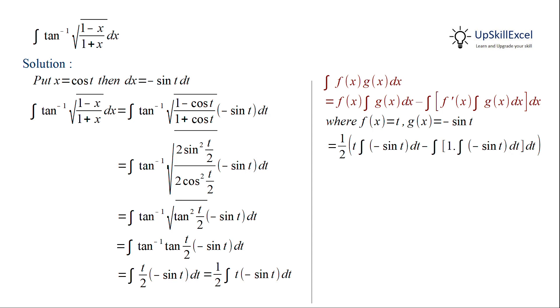We know that integration of minus sin t is cos t and integration of cos t is equal to sin t. Therefore, on doing integration, we get half of t cos t minus sin t plus c.